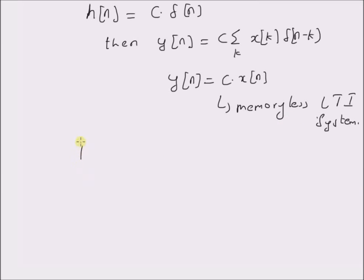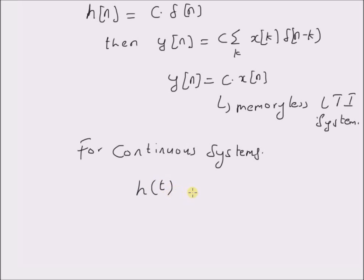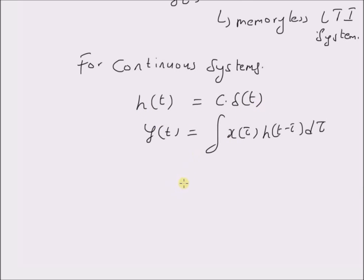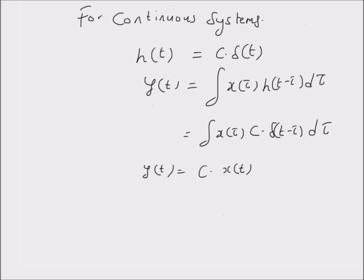Now, for continuous systems, the crucial property is that the impulse response h of tau should be equal to a constant multiplied by the impulse signal. Then the system has no memory. In this case, y of t is equal to the integral of x of tau times h of t minus tau d tau. By replacing h of tau with c times delta of tau, we have c times x of tau multiplied by delta of t minus tau d tau. By the shifting property, this is equal to c times x of t. Therefore, for continuous linear time invariant systems, y of t is just a multiple of the input — so this is memoryless.